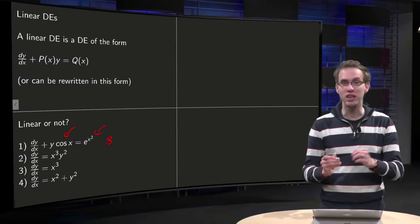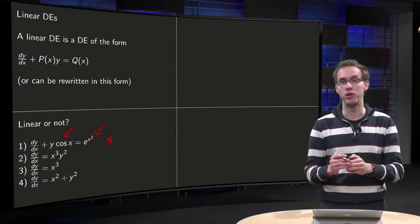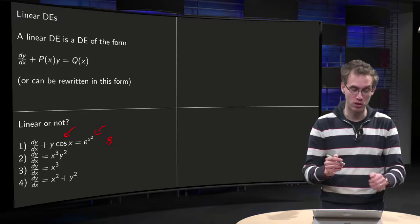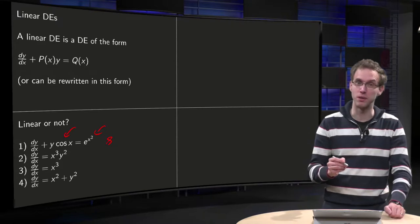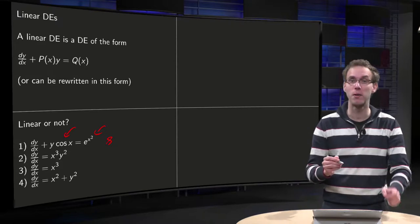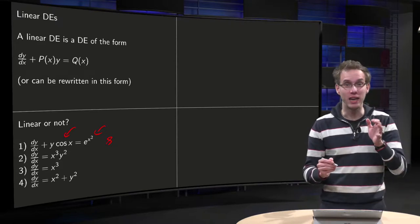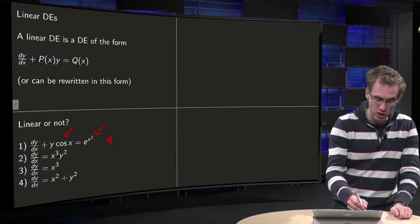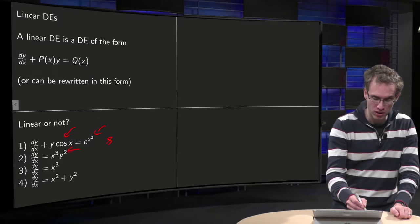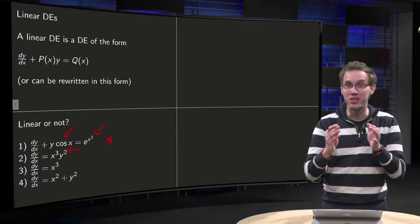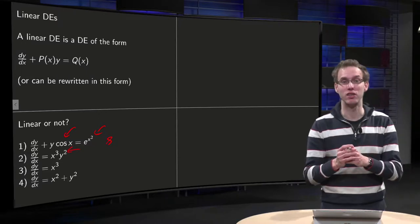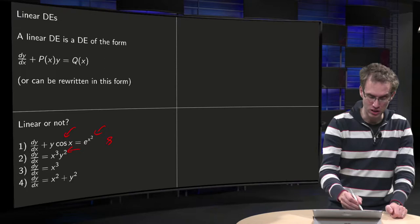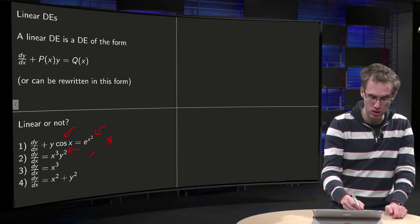The second one looks much easier: y' divided by x equals x cubed times y squared. The x cubed is okay, but the y squared is not. The y is not linear in this equation — we have a y squared — so the second equation is not linear.